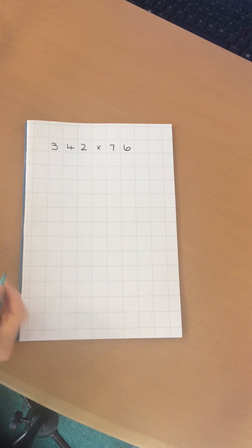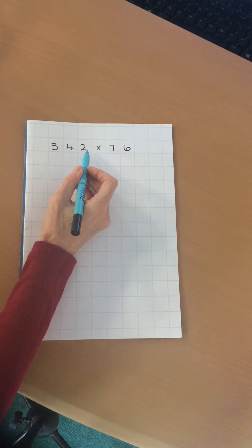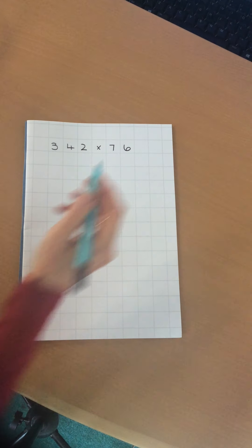So today we're going to have a look at long multiplication. Because it's been quite a while since we've done any at school, I thought a quick refresher might be useful. The question I'm going to look at is 342 multiplied by 76.